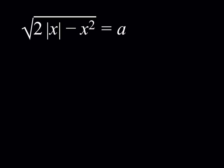The first thing to note is that we have a radical, and the square root of something always needs to be greater than or equal to 0. So if a is less than 0, then we have no solution — I'm talking about real solutions here, not complex ones.